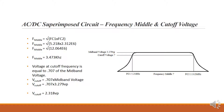The cutoff frequency output should equal 0.707 of the mid band voltage — or 70.7% of mid band. Our mid band voltage is 3.279 volts peak, so 70.7% of that is 2.318 volts peak. At 5.218 Hz we should see 2.318 volts peak, and at 2.312 megahertz we should also see 2.318 volts peak.